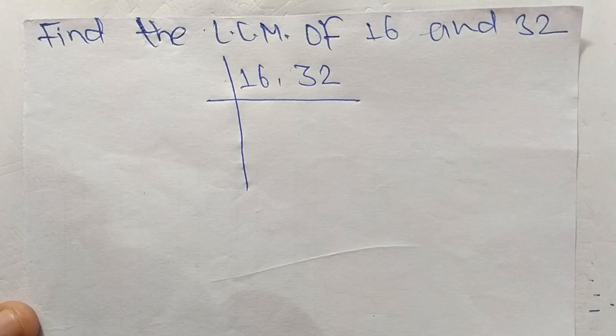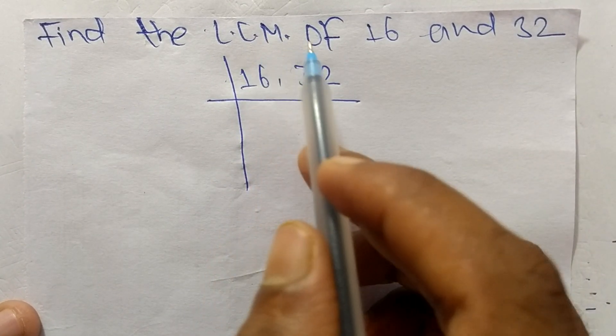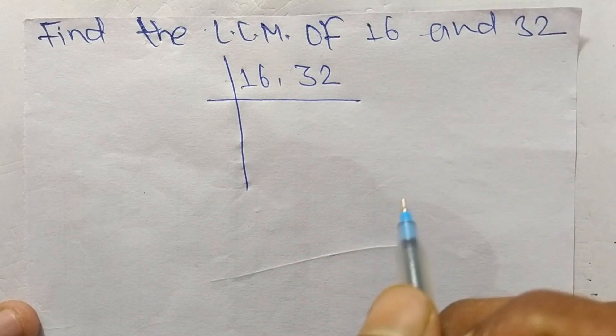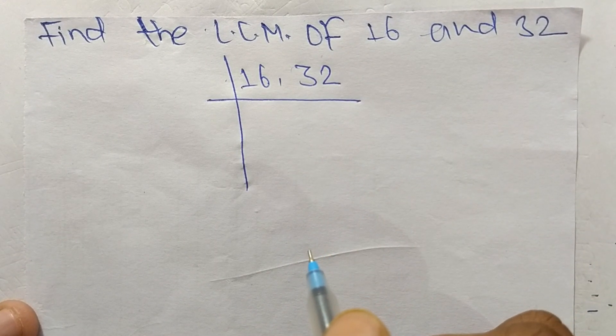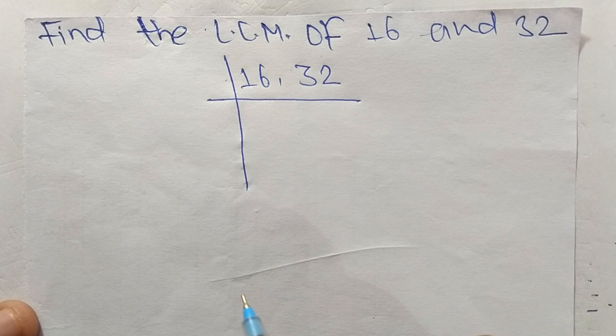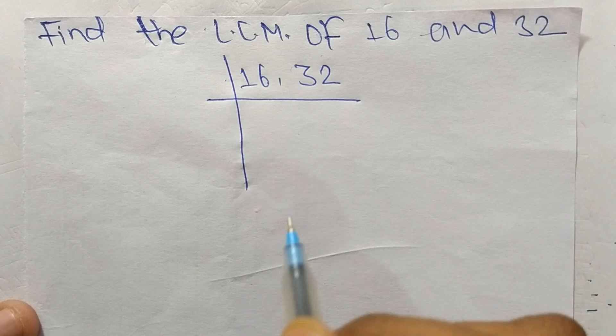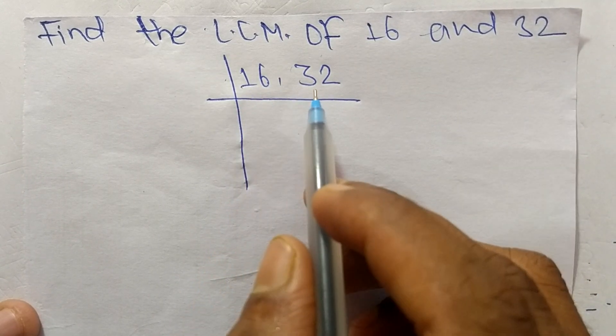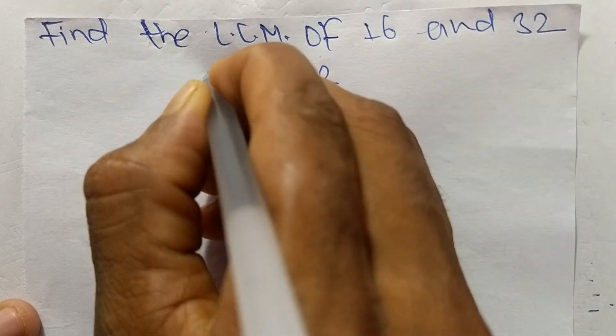So today in this video we shall learn to find the LCM of 16 and 32. To find LCM, first we have to choose the lowest number that can exactly divide 16 and 32. The number is 2.